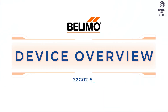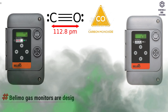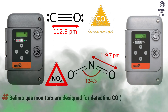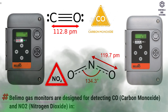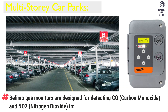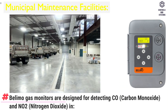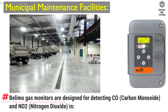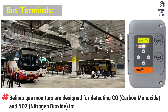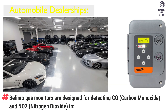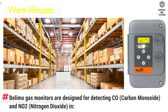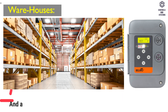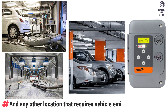Device Overview. B-Limo Gas Monitors are designed for detecting carbon monoxide and nitrogen dioxide in multi-stored car parks, municipal maintenance facilities, bus terminals, automobile dealerships, loading docks, warehouses and any other location that requires vehicle emissions monitoring.